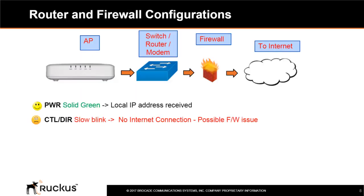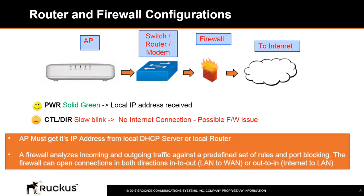If the power LED is solid green and the Control or DIR LED blinks slowly, this indicates no internet connection. By now, the AP must have received its IP address from the local DHCP server. If the control LED continues to blink slowly, a common symptom could be that the firewall is blocking required ports to the Ruckus cloud. A firewall analyzes incoming and outgoing traffic against a predefined set of rules and port blocking. The firewall can open connections in both directions — in to out (LAN to WAN) or out to in (internet to LAN). Ruckus Cloud requires some firewall ports to be open in the in-to-out direction only.